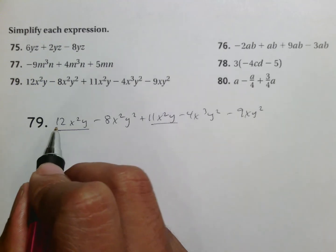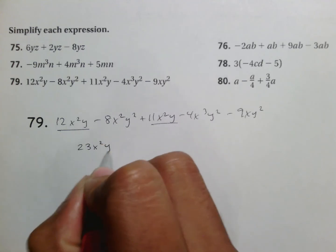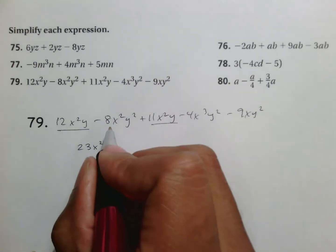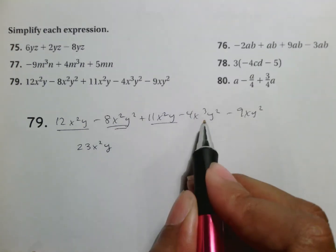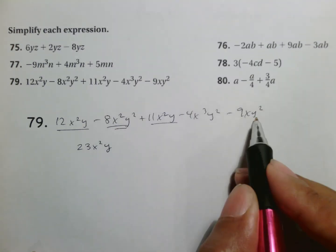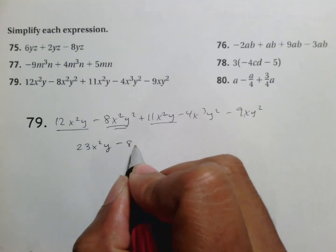So now you put 12 and 11 together. 12 plus 11 makes 23. The label stays the same x²y. And then I use this double line so I can see this. Is there any other x²y²? Nope. That's x³y². 9xy². No. So I just bring it down just like I did with the juice in the first example.